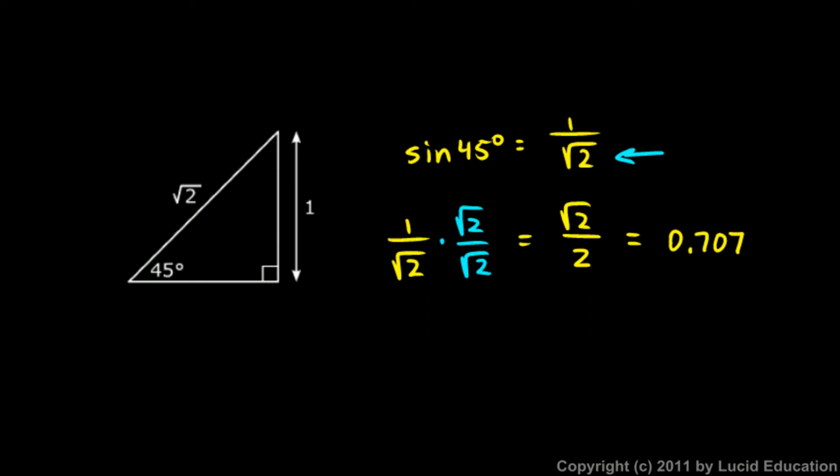Those are good numbers to remember. This number shows up a lot just because 45-degree angles show up a lot. The sine of 45 degrees is square root of 2 over 2, it's approximately 0.707. And you should understand why that is the case. That arises from the fact that the hypotenuse is always the square root of 2 times the length of one of the sides.